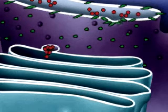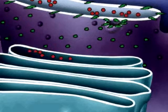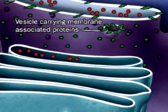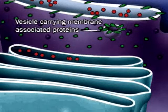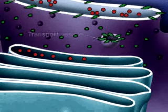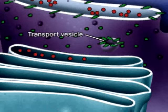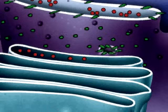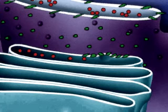Another vesicle pinches off the ER, carrying proteins in its membrane. It also moves to the Golgi apparatus, and when its membrane fuses with the Golgi apparatus, the proteins it carries remain in the Golgi membrane.